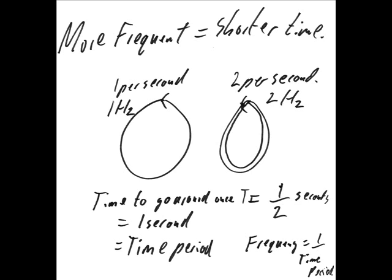The time taken for a runner to complete one circuit of the track is called the time period. The time period and frequency are inversely proportional. The higher the frequency, the lower the time period.